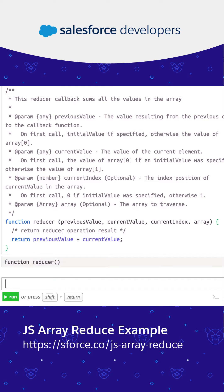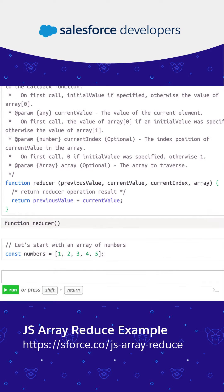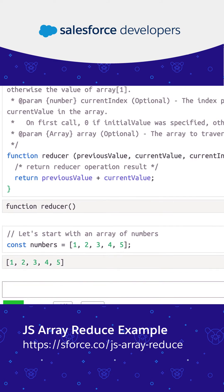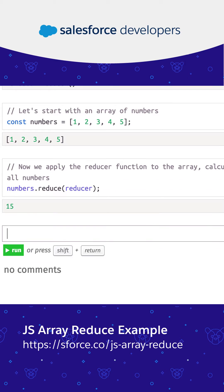The best way to understand the reduce operation is by adding all the numbers in an array. Let's start with an array of numbers. Now we apply the reducer function to the array, calculating the sum of all numbers.